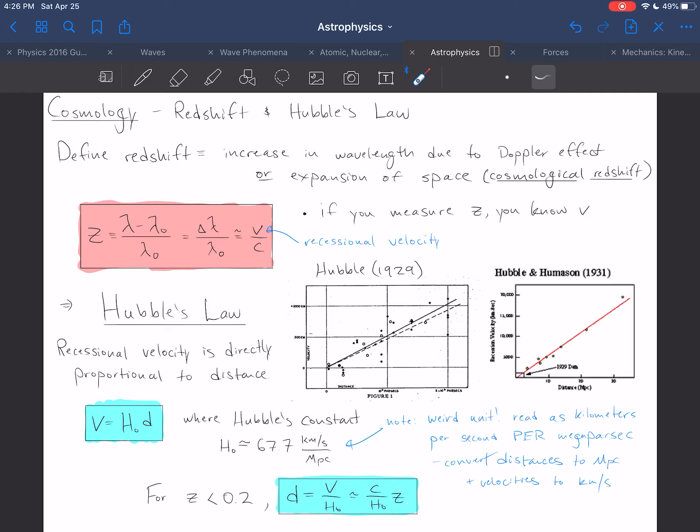Edwin Hubble, in 1929, discovered what is now known as Hubble's law, which is that the recessional velocity is directly proportional to the distance away from us for a series of galaxies, and for galaxies in general.